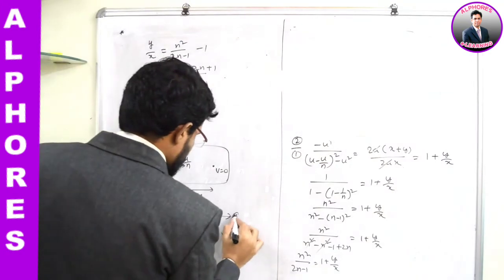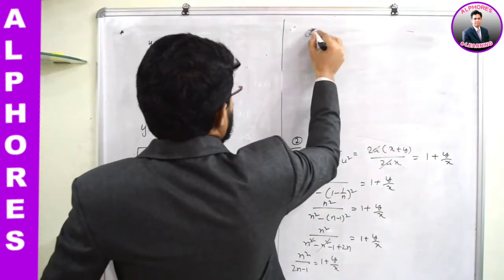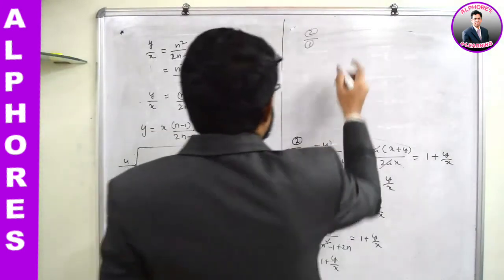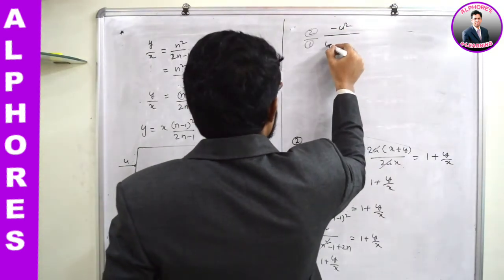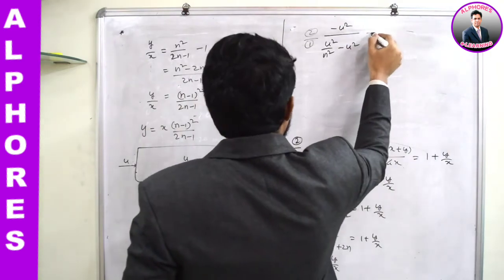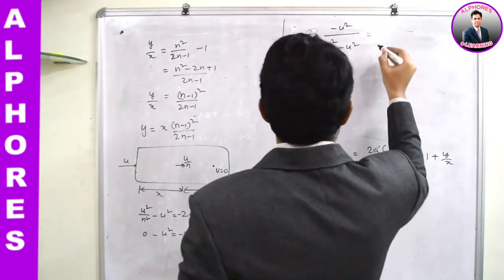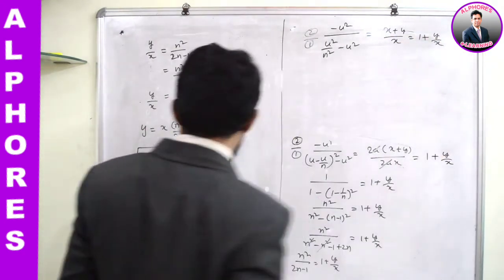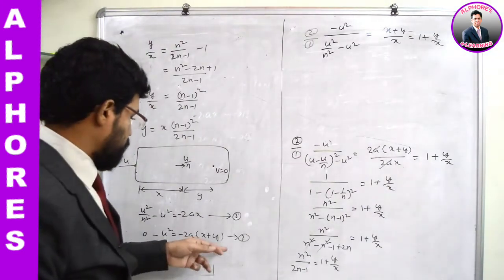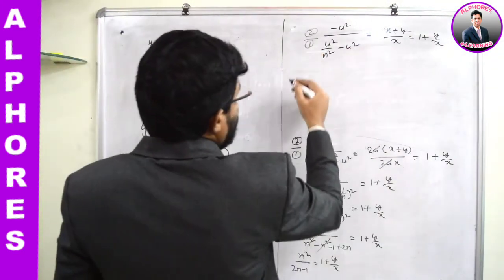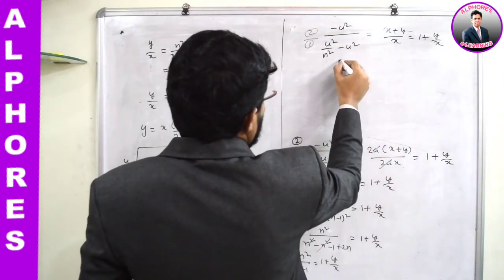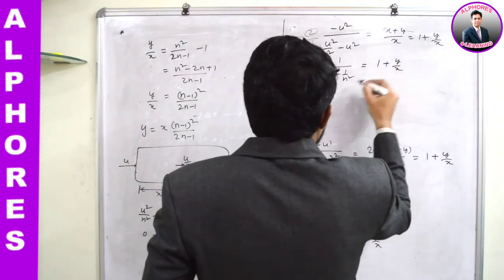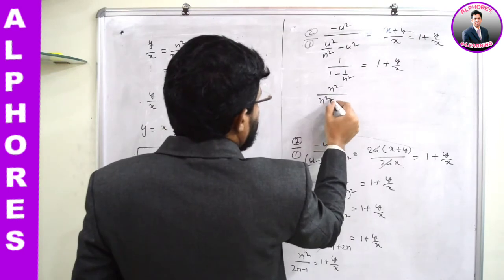Taking equation 1 and equation 2, dividing equation 2 by equation 1: -u² / (u²/n² - u²) = 2a(x + y) / 2ax. The 2a cancels, giving (x + y)/x or 1 + y/x. Simplifying: n²/(n² - 1) = 1 + y/x.